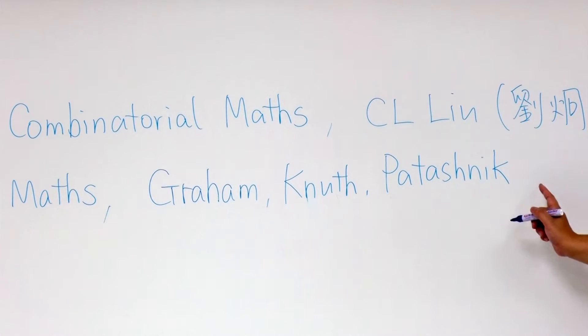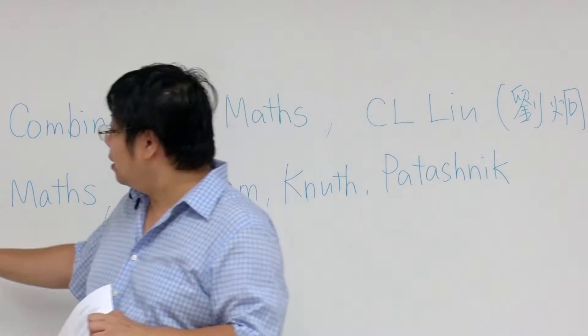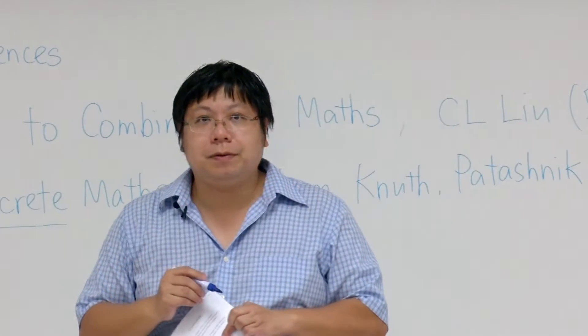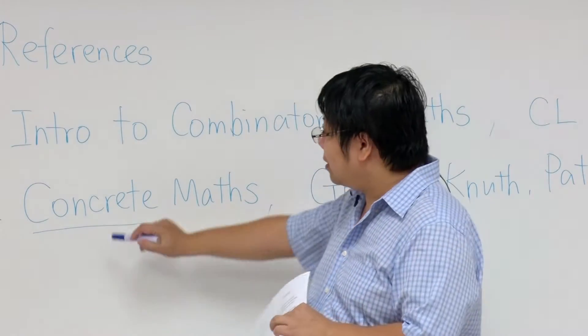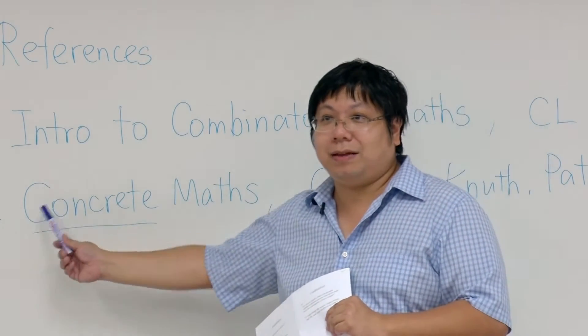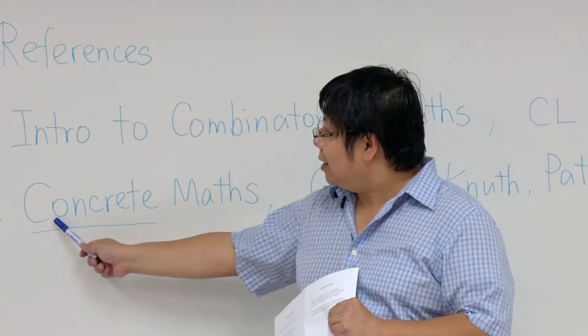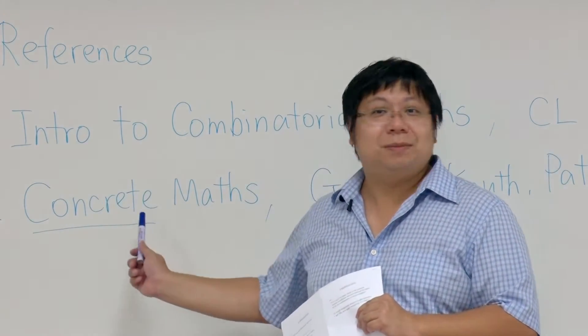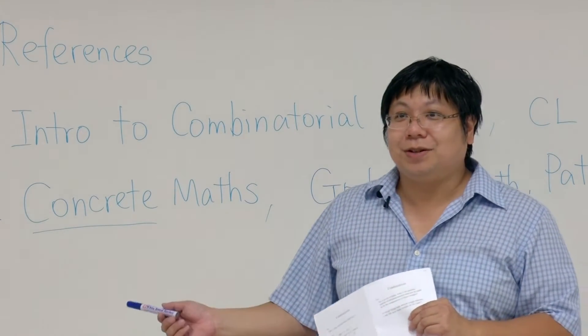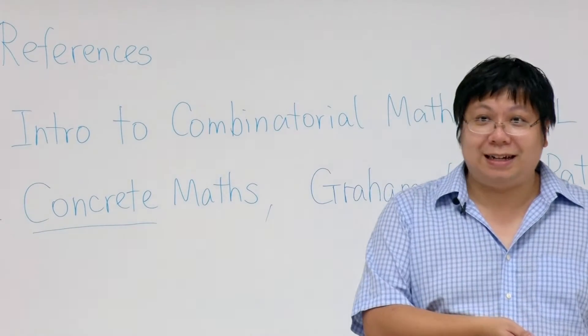So this is an interesting textbook. It has a very special name. Before that, I believe nobody talks about math as concrete math. Concrete math, according to the authors, corn comes from continuous, crete comes from discrete.